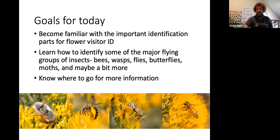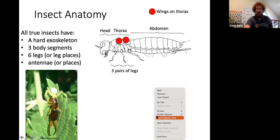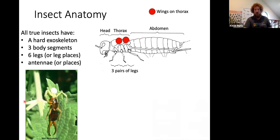When we talk about insects, we're talking about a group of invertebrates — things without backbones. All true insects have a hard exoskeleton, three body segments (the head, thorax, and abdomen), six legs or leg places, and antennae or places for antennae. In this photo you can see a crab spider eating a male earwig — one of those things is an insect and one is not. The insect is the earwig; the spider is an arachnid, a different group of invertebrates. One distinguishing characteristic of spiders is that they have eight legs rather than six.